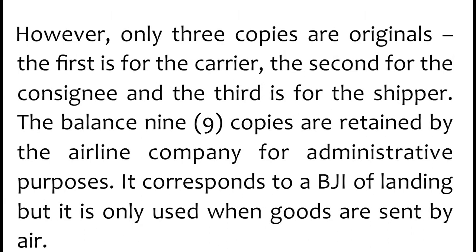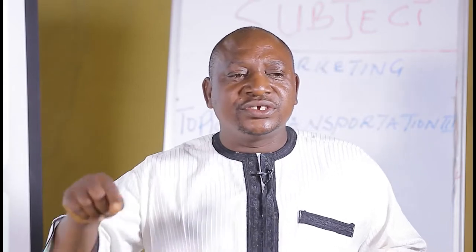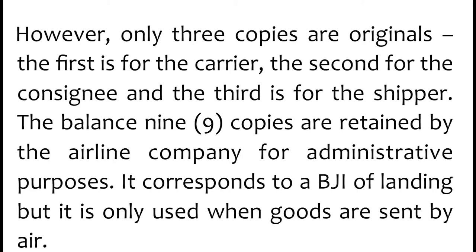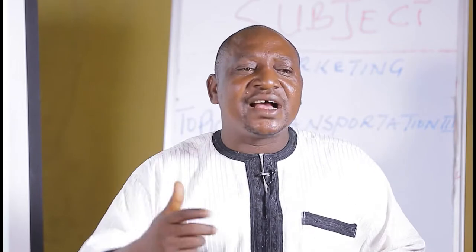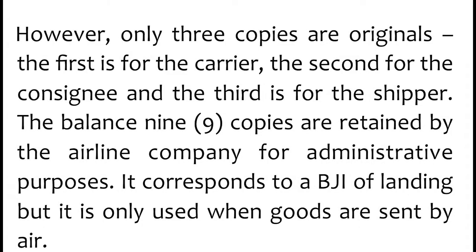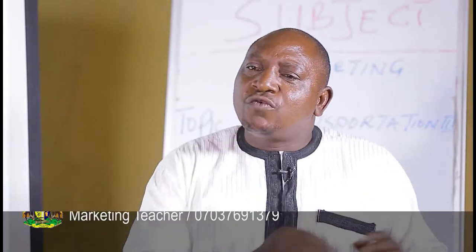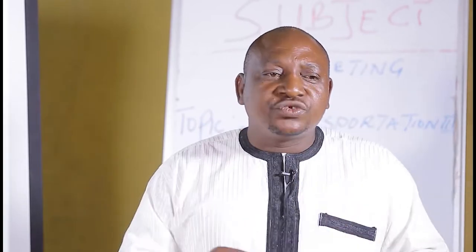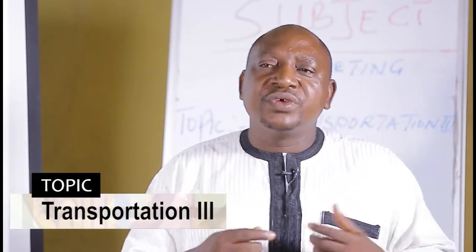However, only three copies are originals. The first is for the carrier — that is the shipper. The second is for the consignee — that is the recipient, someone who has the authority of the delivering note. Then the third is for the shipper, who is the one carrying that consignment. To balance it, there are nine copies which are retained by the airline company for administrative purposes.